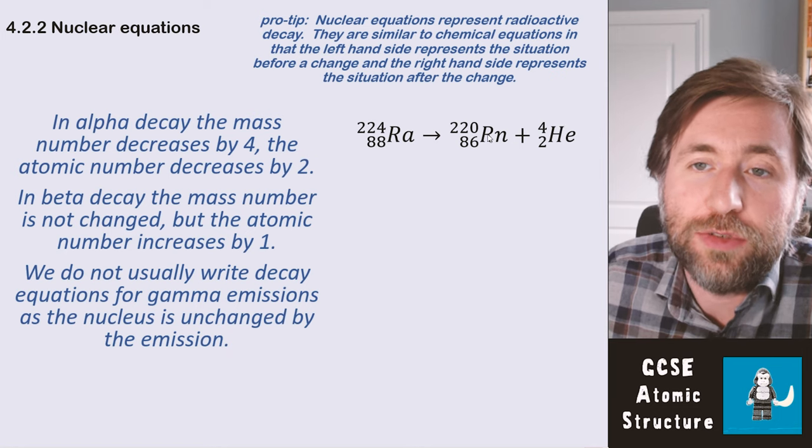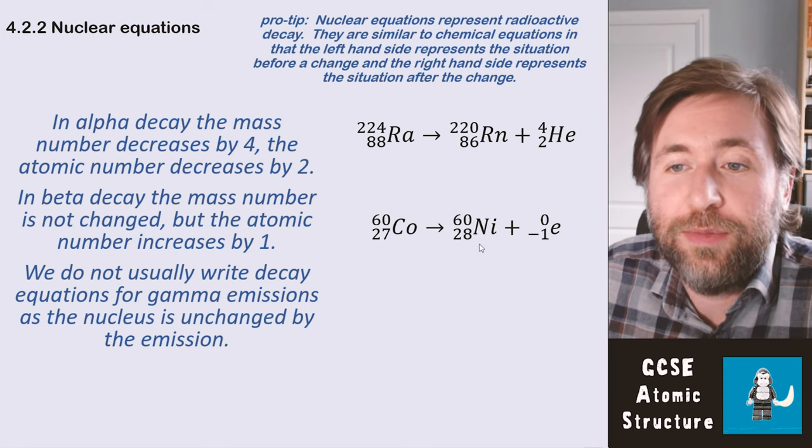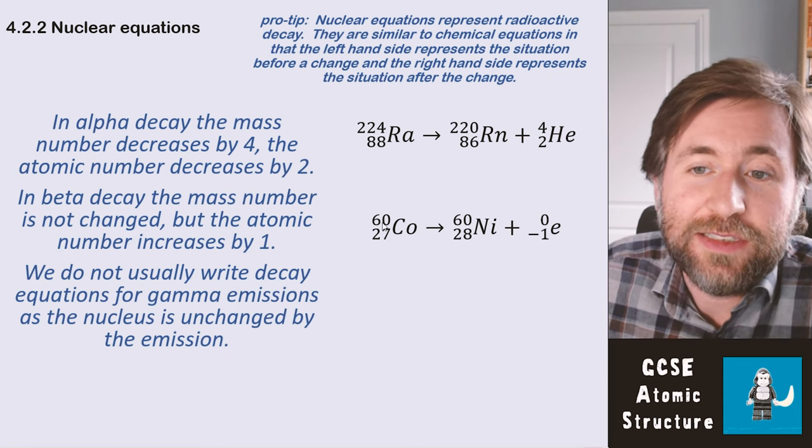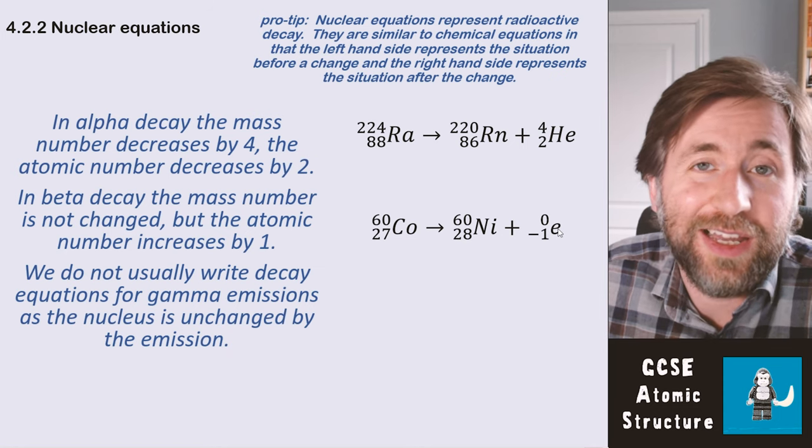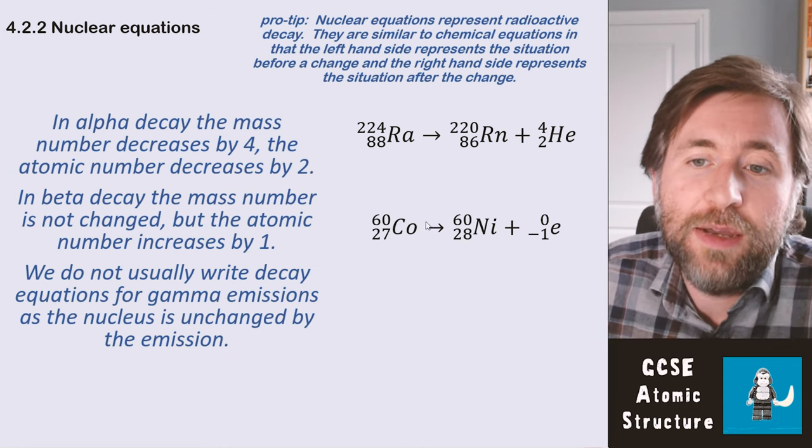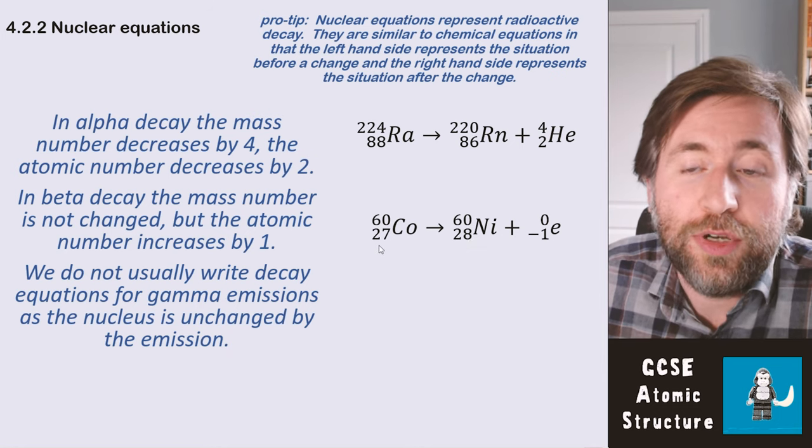Now what has happened here is that the mass number hasn't changed because an electron is what's given out, and that has basically zero mass. But the proton number has changed because actually one neutron has turned into a proton in order to give out that piece of negative charge. So the bottom line reads 27 equals 28 minus 1.